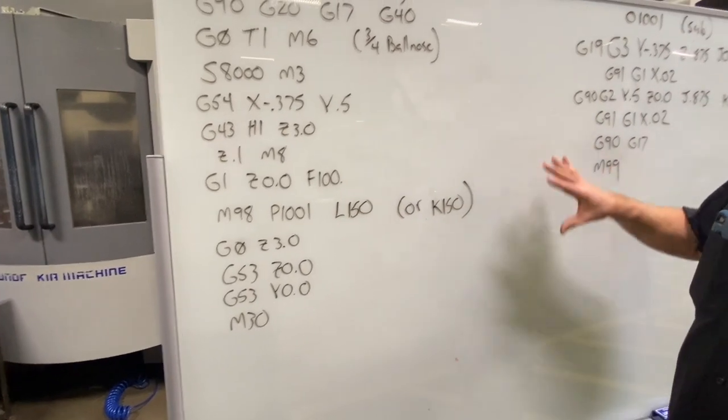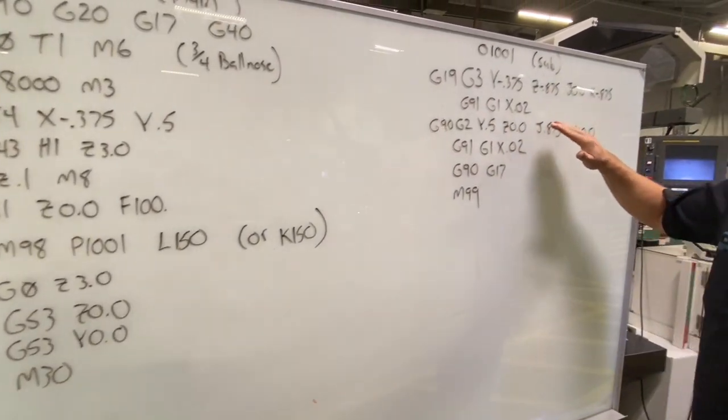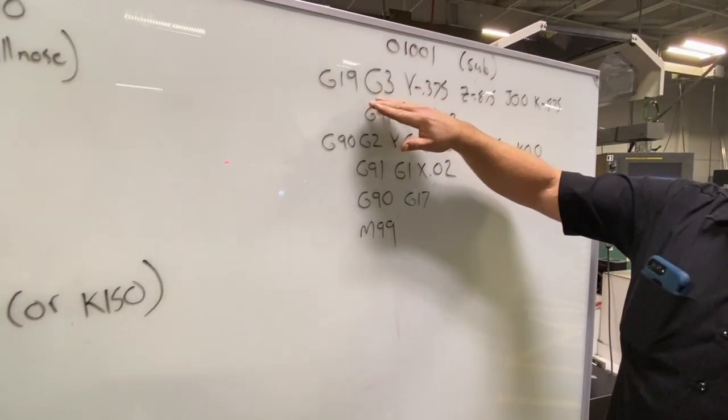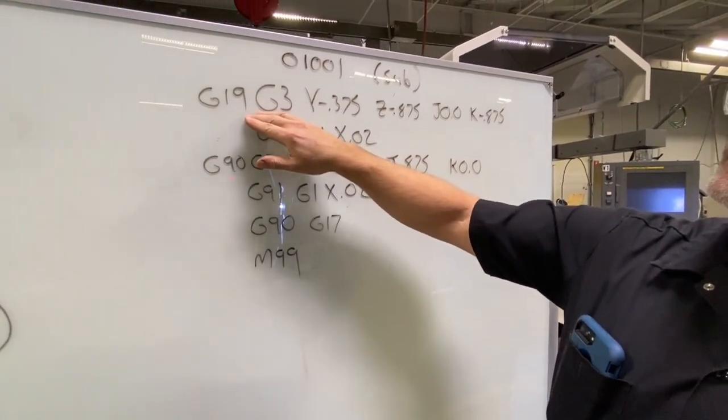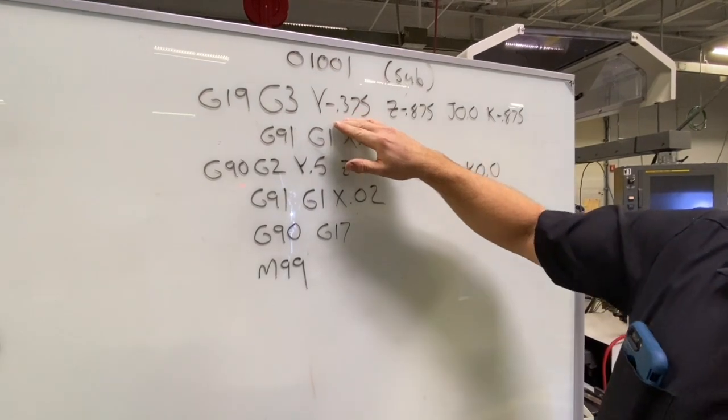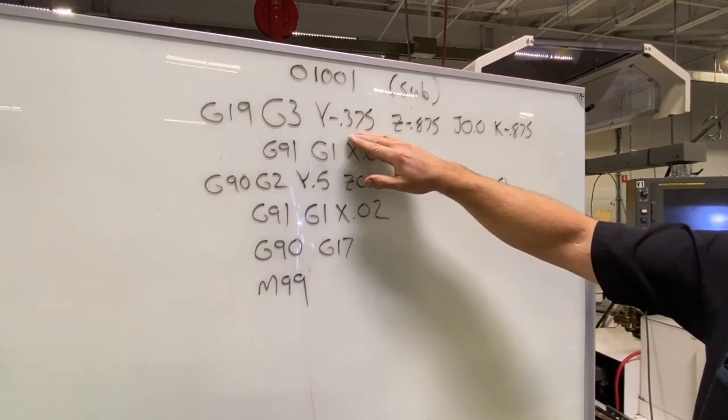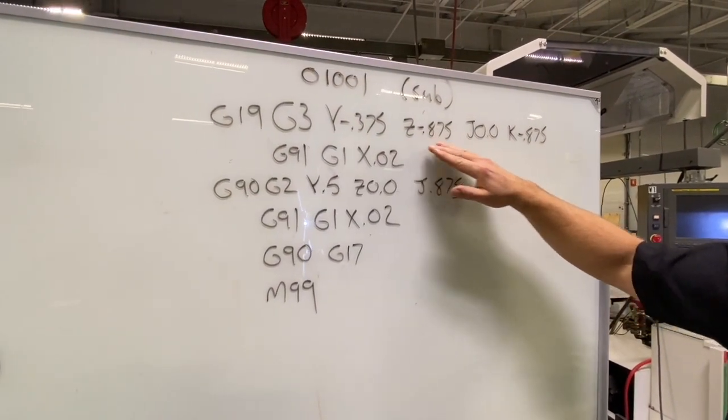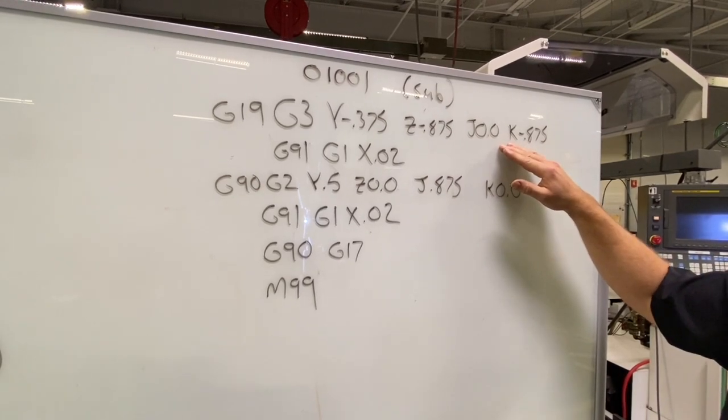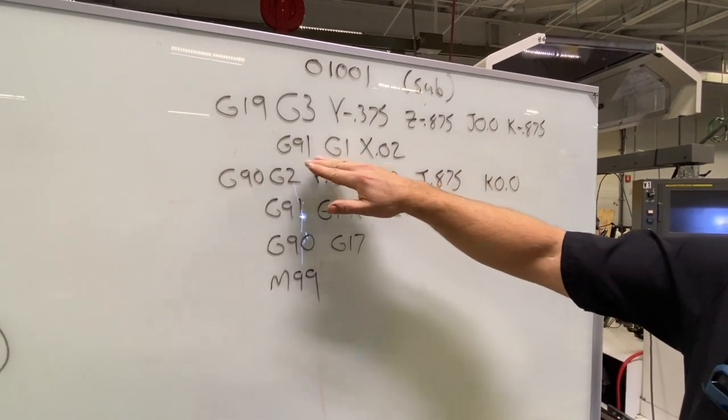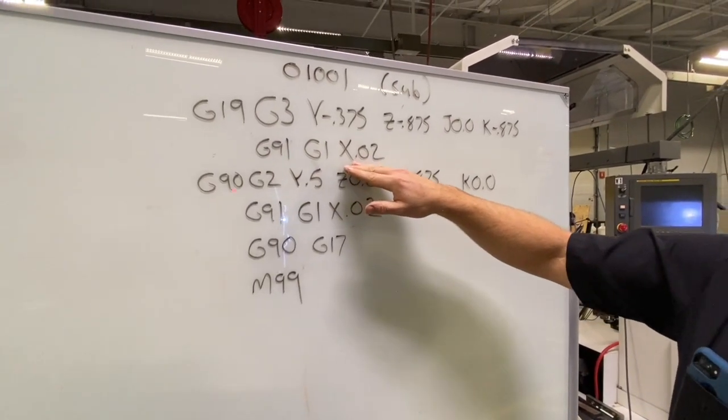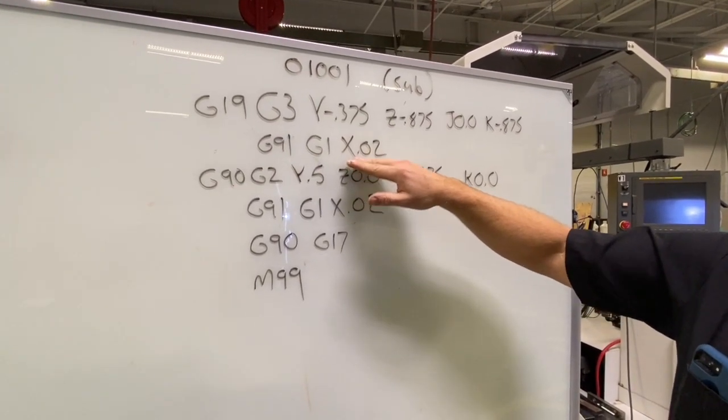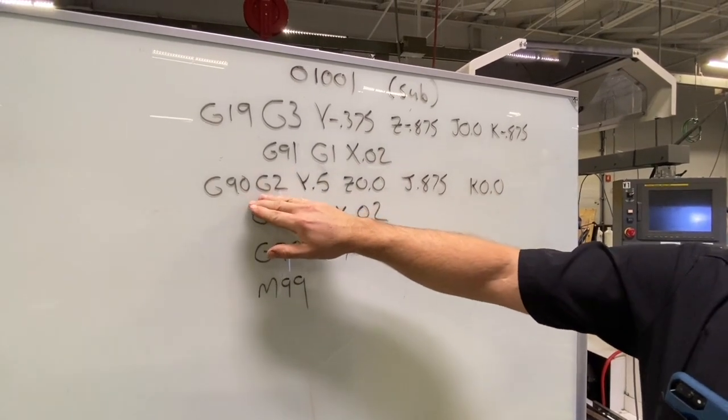And then we go into our sub program. So I'm going to go over to my sub program here. And once we're in position, our first move again is our counterclockwise move interpolating in the Y and Z work plane to my Y negative 0.375, my Z, and of course our vectors. And then we go back to a linear mode, but I'm going to move incrementally now, G91, and I just shift over 20 thousandths, and that gets it into position to go back up to the top of the part.